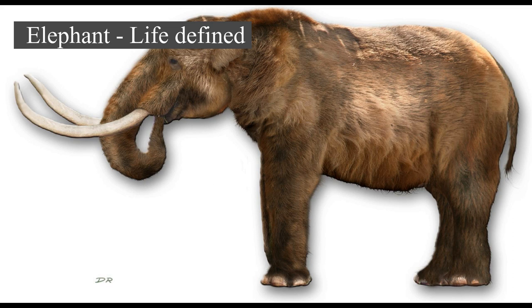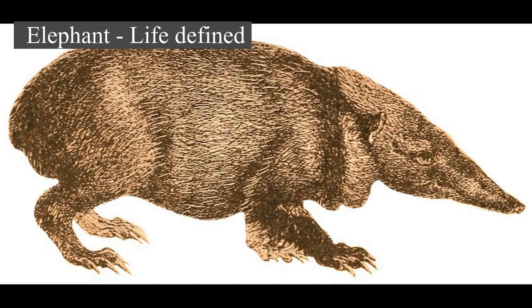Elephants can live up to 70 years in the wild. They communicate by touch, sight, smell, and sound. Elephants use infrasound and seismic communication over long distances. Elephant intelligence has been compared with that of primates and cetaceans. They appear to have self-awareness and appear to show empathy for dying and dead family members.